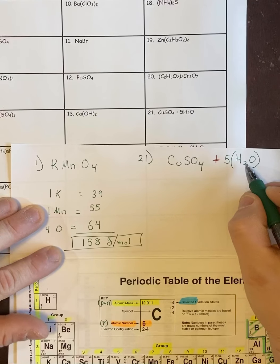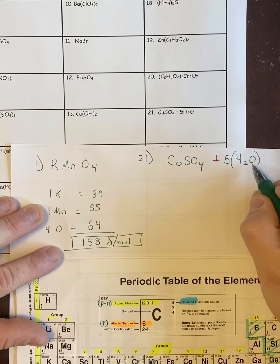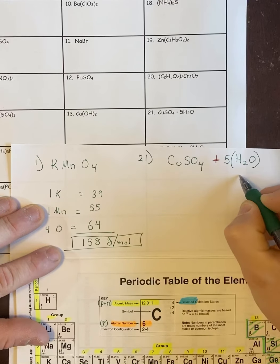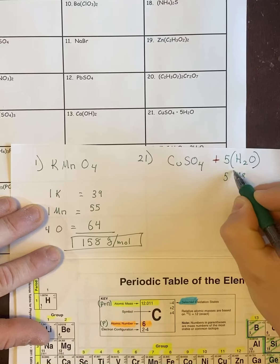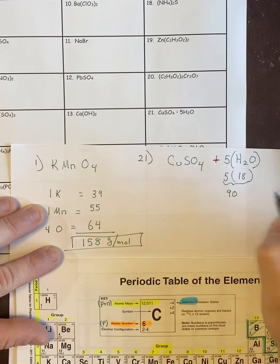H2O weighs 18. So if you know that already, that's great. But if not, you can do the math, and you figure there's one O that's 16 and two H's that are one each. So 16 and 2. So it weighs 18. So five waters then is going to weigh 90 once you just multiply that together.